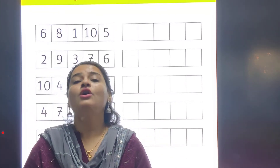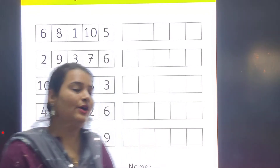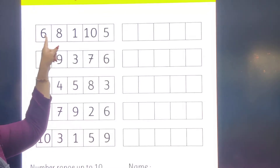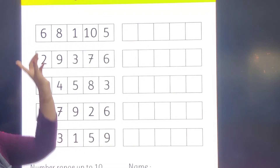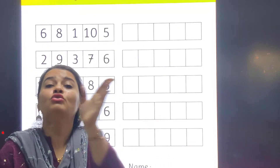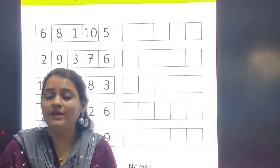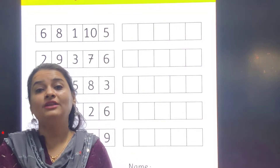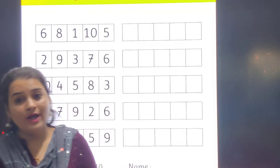So here we have some numbers: 6, 8, 1, 10, and 5. Now we have to arrange these numbers from big to small. So I will do backward counting from number 10 to number 1.